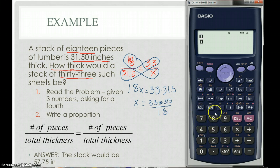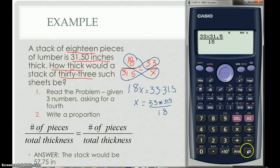So I do my fraction bar, 33 times 31.5. All of that is divided by 18, and that'll tell me how thick. Now, again, I want it as a decimal, so I change it 57.75.